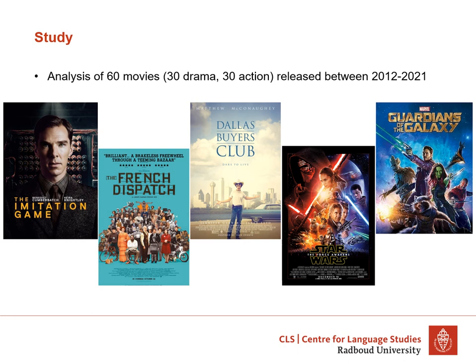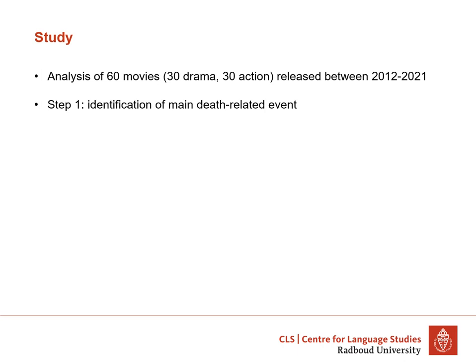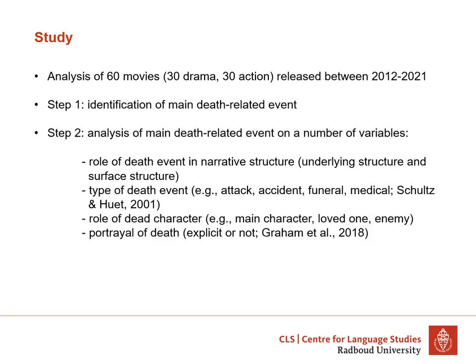We have a wide range of movies, and as you can see there are some examples on this slide. The first step of the analysis was to identify the main death-related events — in many movies there are more death events, but first we identified which of these events is the most important for the story. Once we agreed upon this, we continued with step two, where we analyzed this specific death-related event on a number of variables. We analyzed it in terms of its role in the narrative structure, both in relation to the underlying chronological structure of the story as well as the surface structure of the movie, which did not have to be chronological — for example in the case of flashbacks or flash forwards.